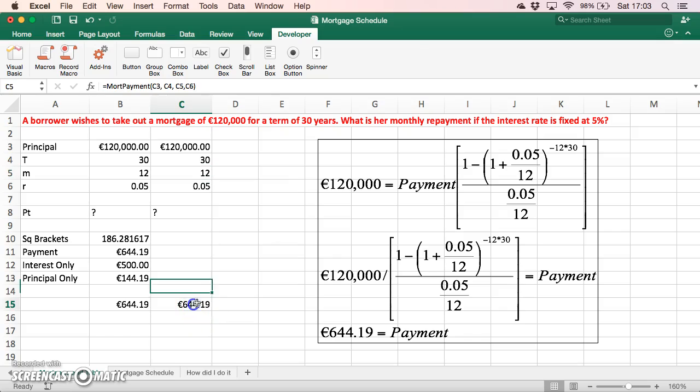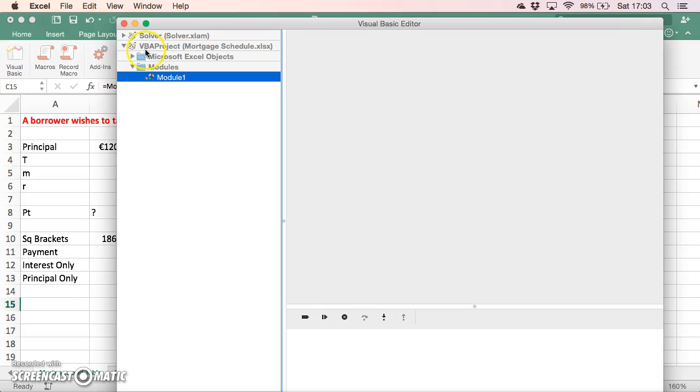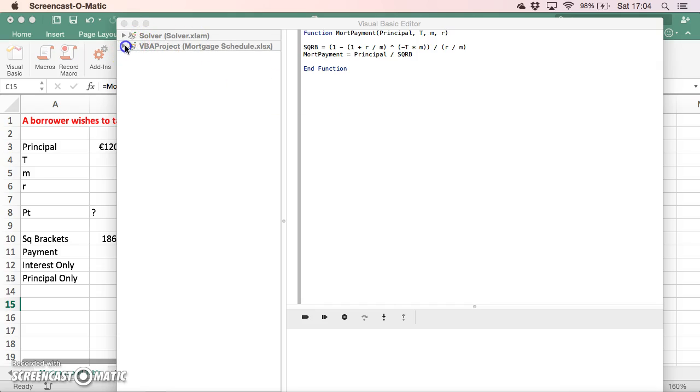If we go back in and look at our VBA function, opening module one, we see we have 'function mortgage payment' with the principal, the time period t, m being the periodicity (12 times a year), and the interest rate r. When we estimate using that function, we get the same mortgage repayment.